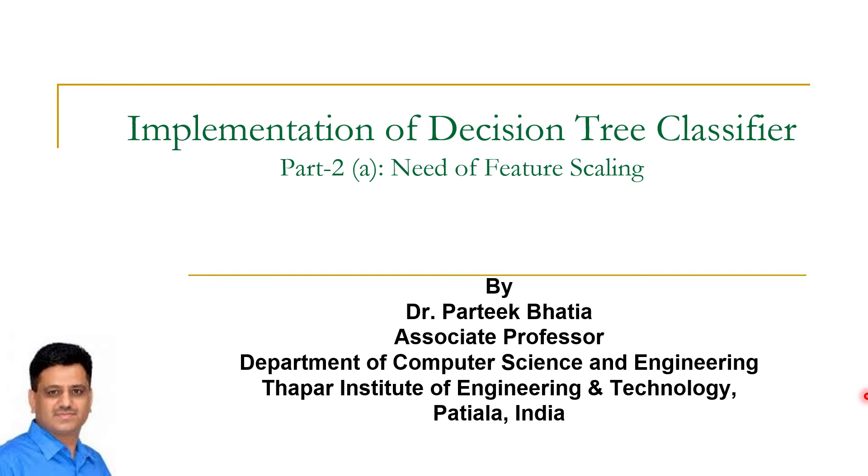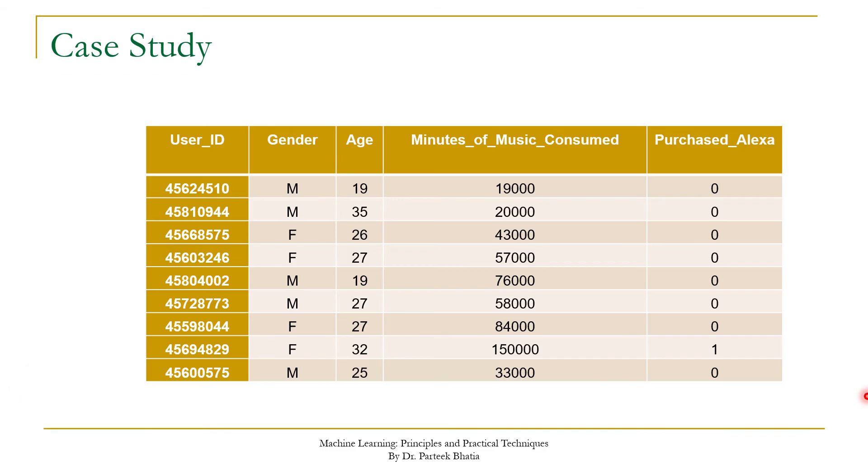In this session we are going to discuss implementation of decision tree classifier and the need of feature scaling. Let us start this session. In previous sessions we discussed that we are building a classifier to identify whether the customer is going to purchase Alexa or not based on his input attributes.